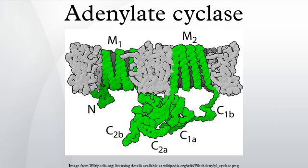Adrenaline indirectly stimulates AC to mobilize stored energy in the fight-or-flight response. The effect of adrenaline is via a G-protein signaling cascade, which transmits chemical signals from outside the cell across the membrane to the inside of the cell. The outside signal binds to a receptor, which transmits a signal to the G-protein, which transmits a signal to adenylate cyclase, which converts adenosine triphosphate to cyclic adenosine monophosphate. cAMP is known as a second messenger.